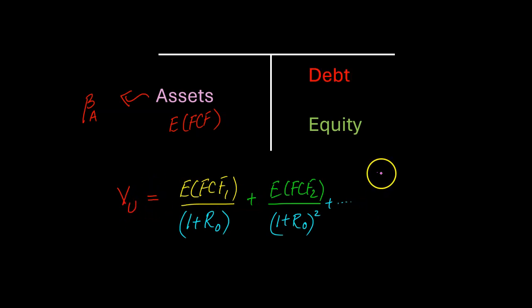Now imagine if the same firm had less equity and more debt. So there's a change in capital structure. Nothing has changed about the underlying assets. It's the same assets. It's just that they're now funded partly with debt and partly with equity. Is the firm unlevered now? No, the firm is not unlevered. It is now levered.